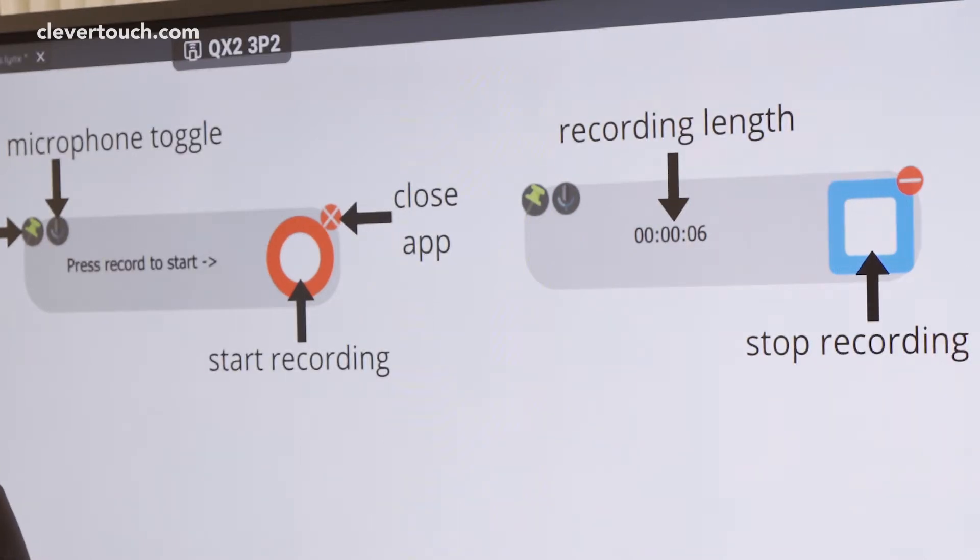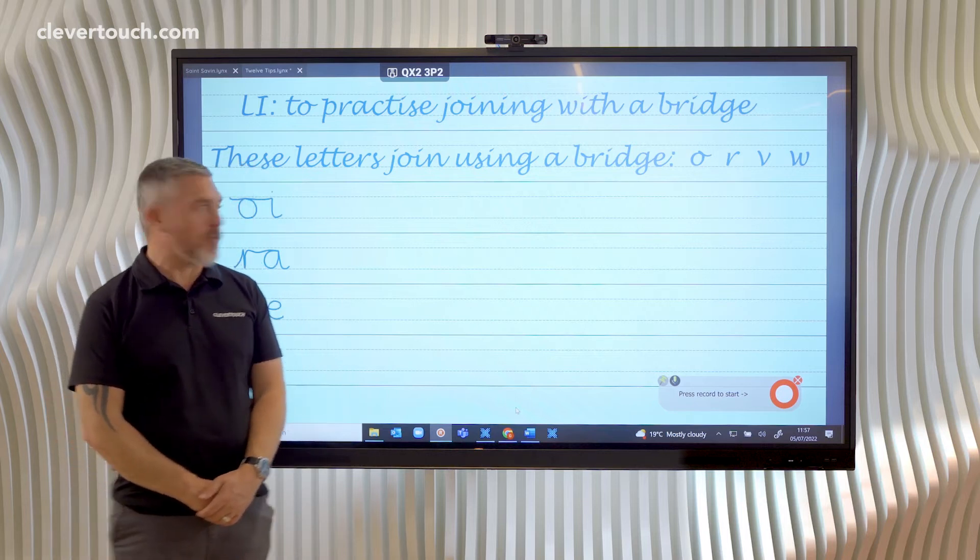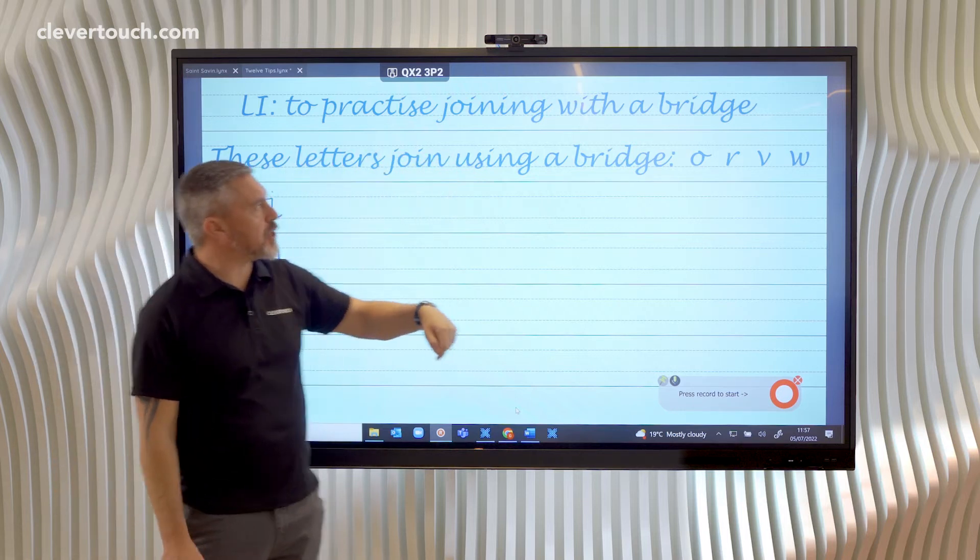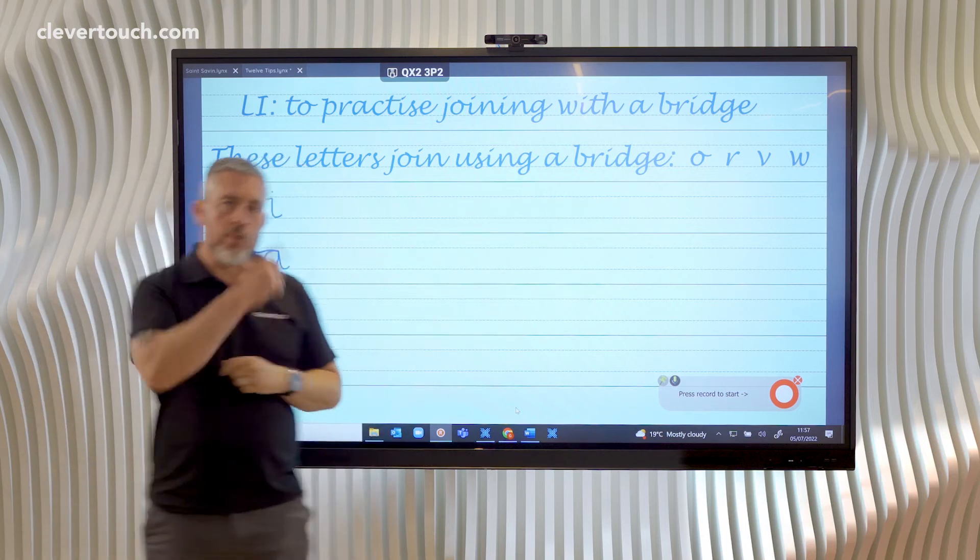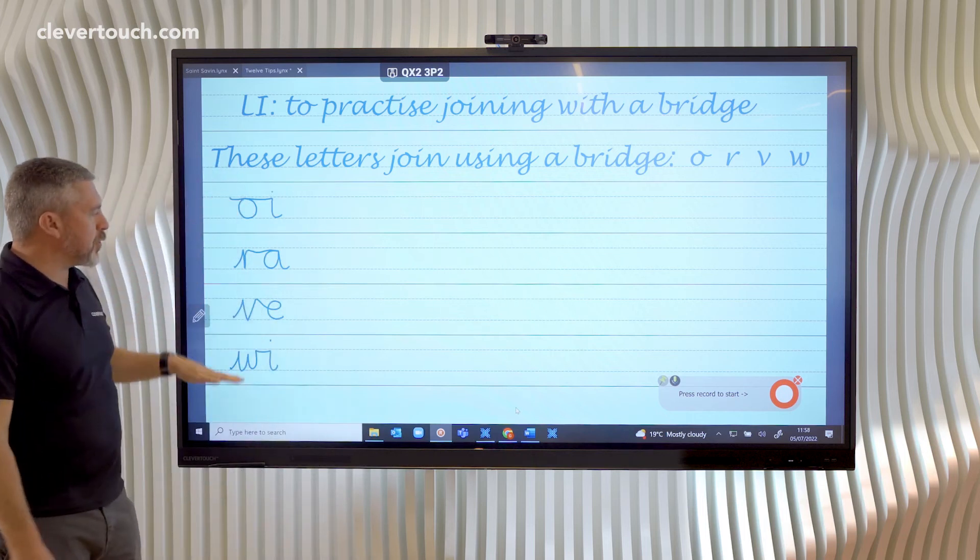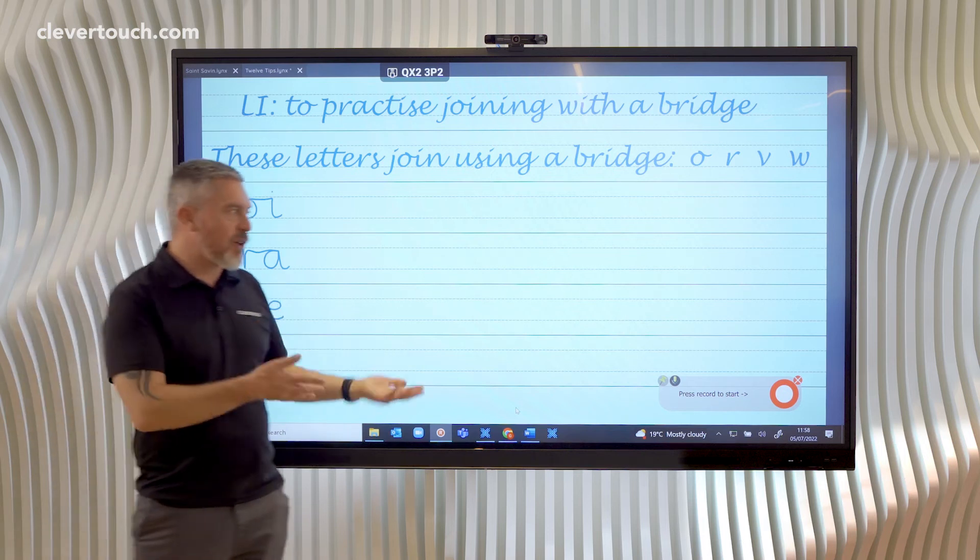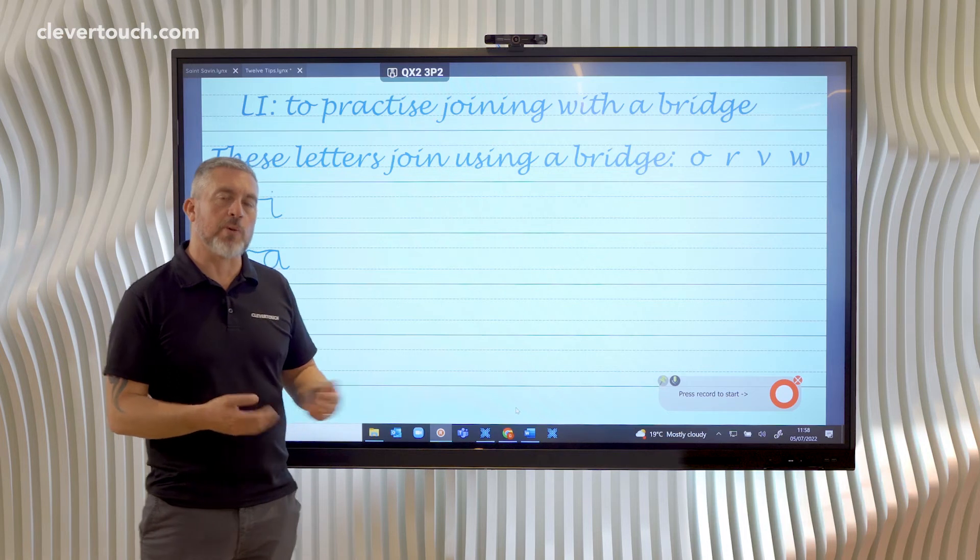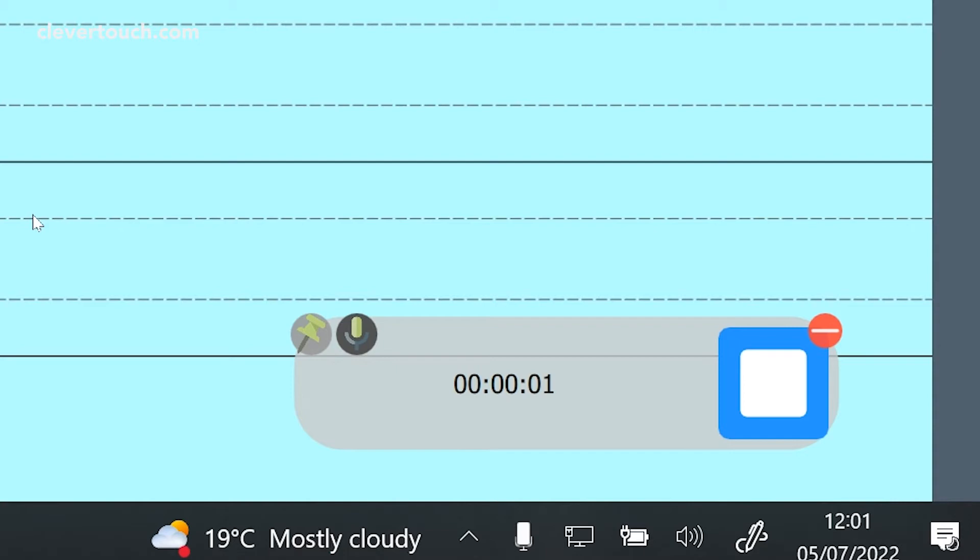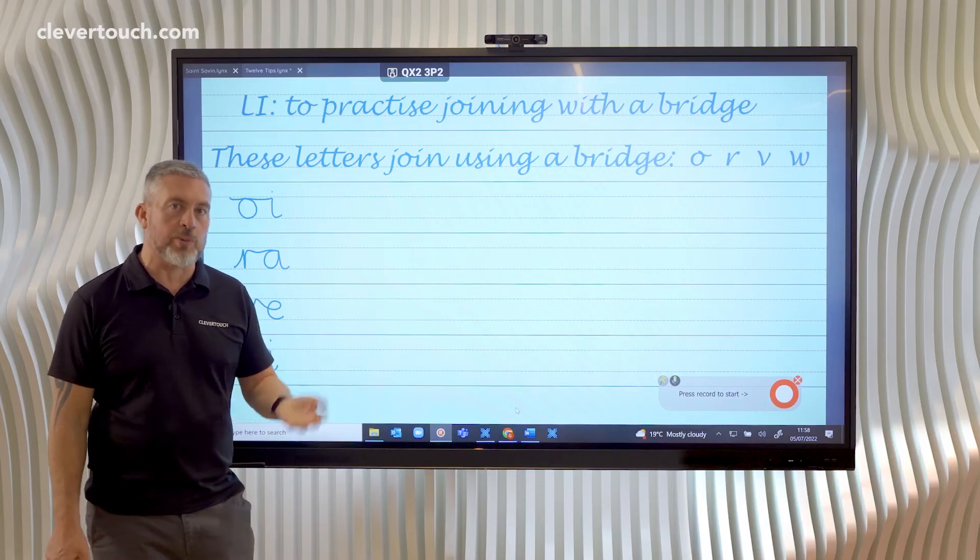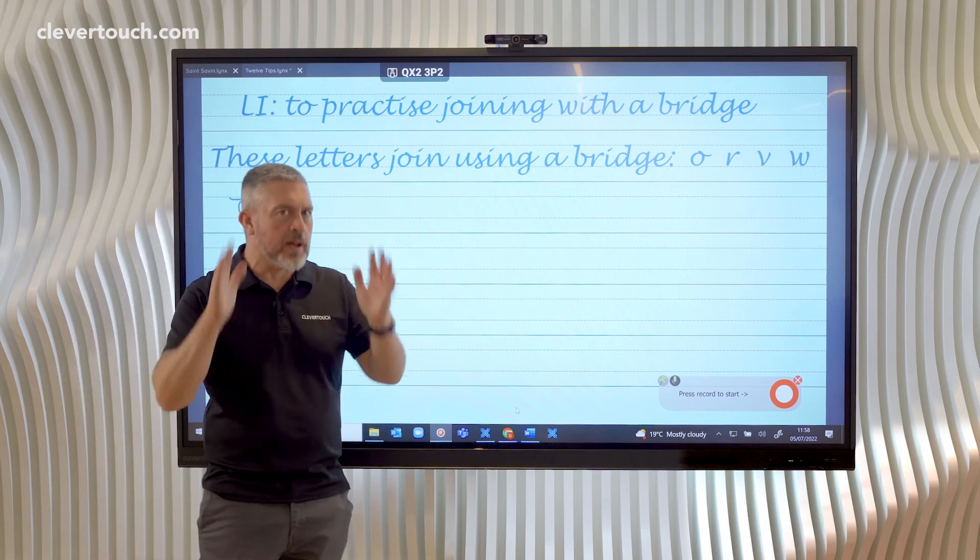I've prepared a slide that's going to help children with their handwriting. It's all about practicing joining with a bridge, and we know that we can join the letters O, R, V, and W with a bridge that flicks across. I've got the Links Screen Recorder here ready. It is pinned to the desktop, so when I start to record it will disappear. I don't want to start recording just yet because I want to get into the zone of what I want to explain to the children.